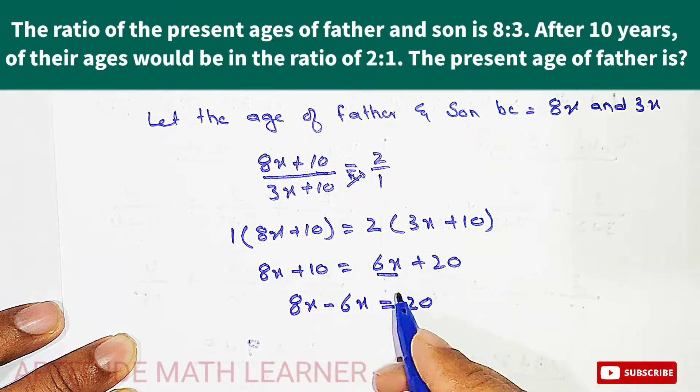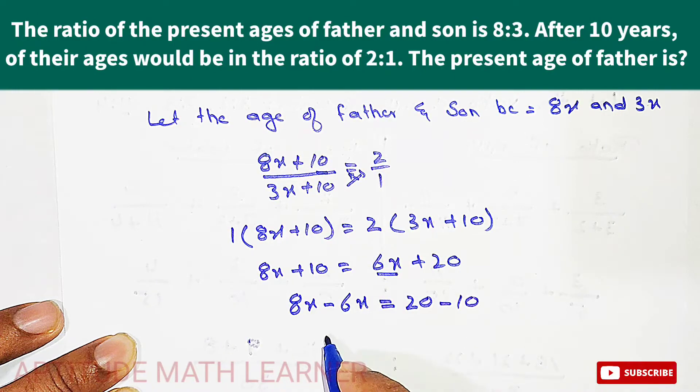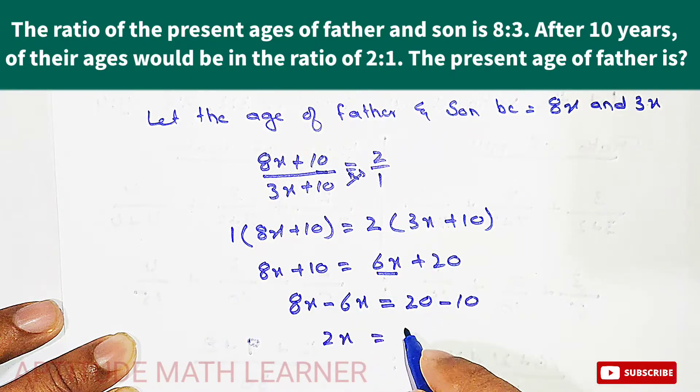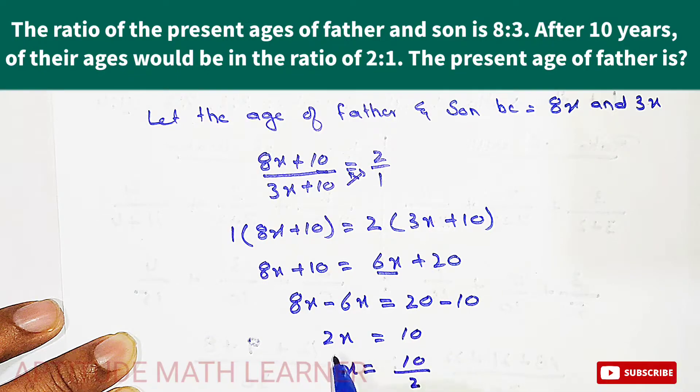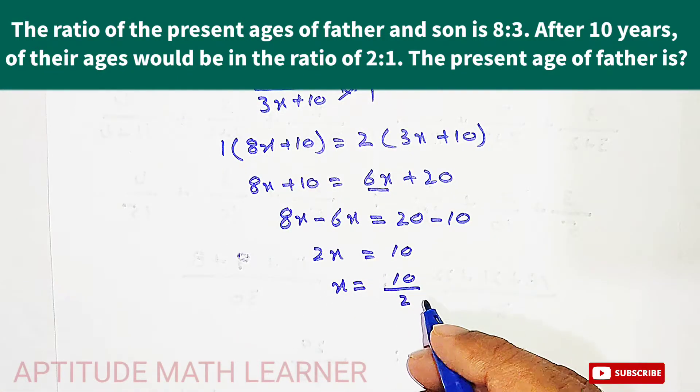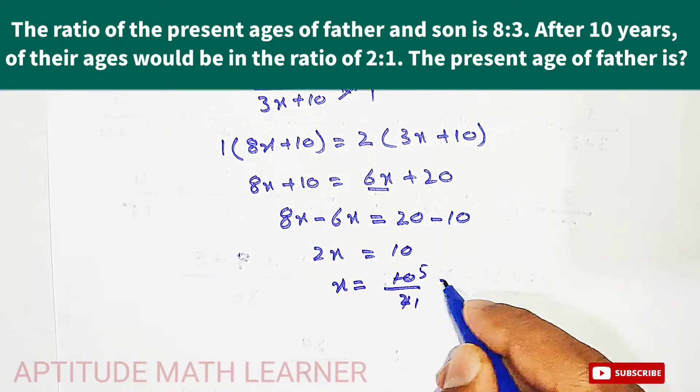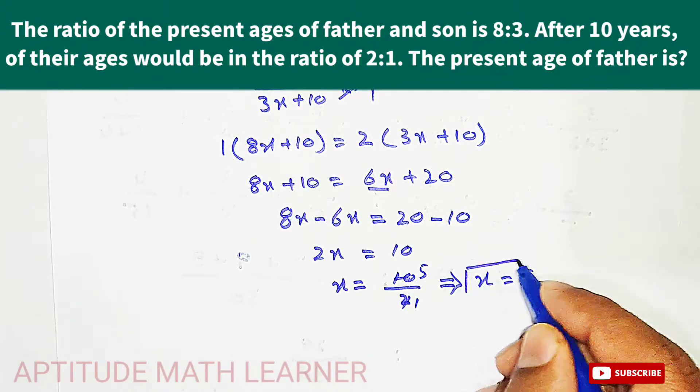So here we get 2x is equal to 10, and x is equal to 10 divided by 2. This 2 goes downward and it divides the digit 10. So 2 ones are 2, and 2 fives are 10. Here we get the value for x, that is 5.